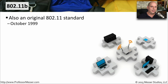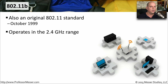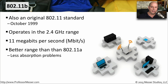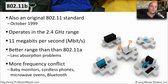Released at the same time as 802.11a was the 802.11b standard, which also came out in October of 1999. Instead of running at 5 gigahertz, it ran in the 2.4 gigahertz range. The maximum theoretical throughput of 802.11b is 11 megabits per second, much lower than 802.11a's 54 megabits per second, but it had better range. There were fewer absorption problems at 2.4 gigahertz, though unfortunately many other devices like baby monitors, cordless phones, and Bluetooth devices also used 2.4 gigahertz.